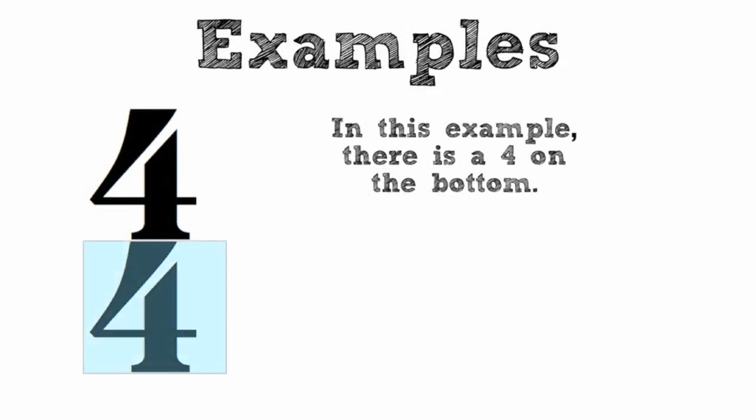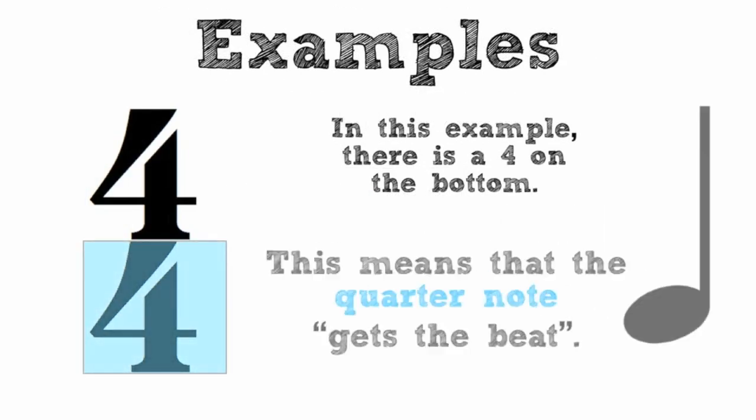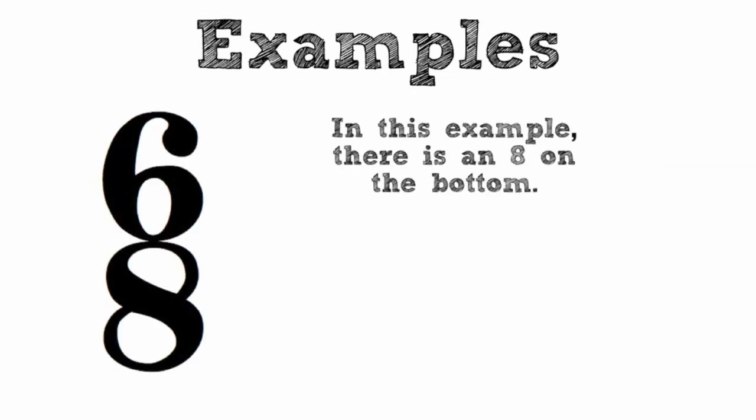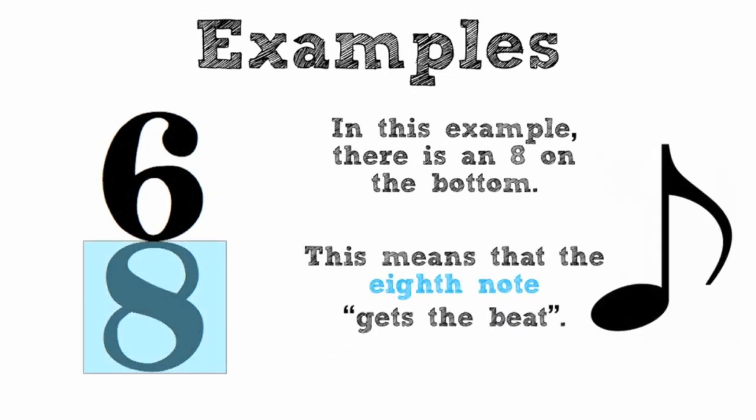In this example there is a 4 on the bottom. This would suggest that the quarter note gets the beat. In this example there is an 8 on the bottom. That means that the 8th note gets the beat.